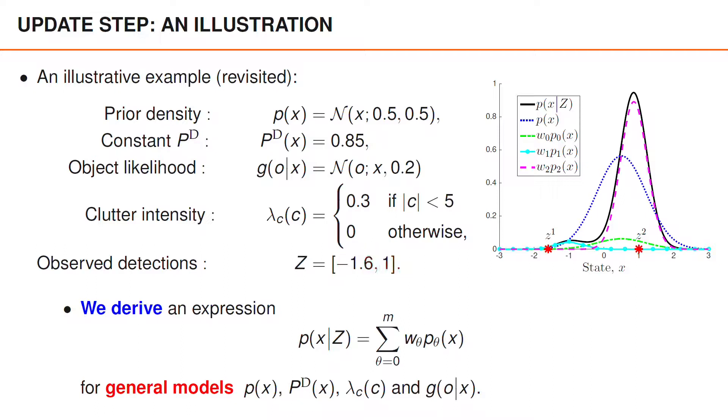Because we have two measurements, we obtain three hypotheses, corresponding to the object being undetected, Z1 being the object detection, and Z2 being the object detection. Like the measurement model, the posterior can be decomposed into one term for each of the three hypotheses.